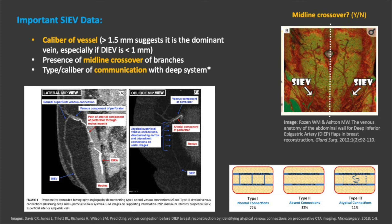The image on the left demonstrates the location of the communication between the SIEV and the DIEV. The classification of venous connections is helpful in risk-stratifying patients. A type 1 venous connection is normal with a straight course between the deep and superficial systems; these patients are good candidates for deep flaps. In type 2, the connections are absent; these patients can still be good candidates if the deep venous system is dominant, as suggested by a large-caliber deep inferior epigastric vein. A type 3 connection is atypical or has an indirect, tortuous course between the superficial and deep systems; these patients are at increased risk of venous congestion and may need supplementary venous anastomosis in the operating room.